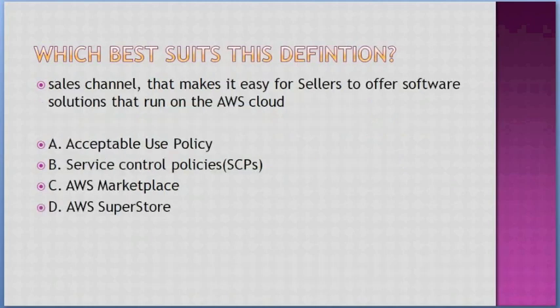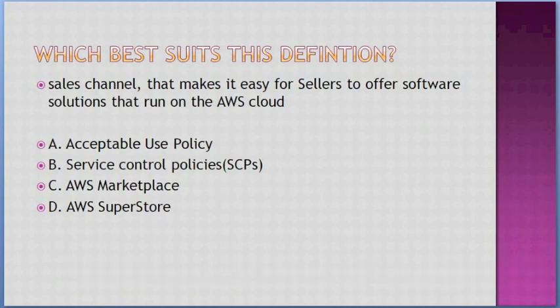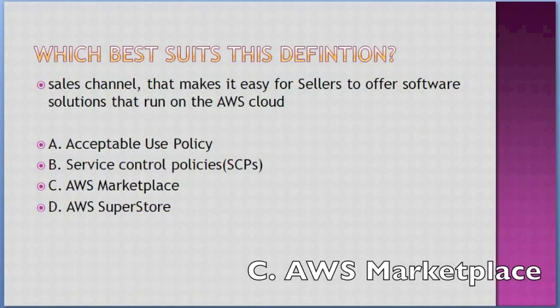Which best suits this definition? 'Sales channel that makes it easy for sellers to offer software solutions that run on the AWS cloud.' Options: A. Acceptable Use Policy, B. Service Control Policies, C. AWS Marketplace, D. AWS Store. Answer: C — AWS Marketplace.